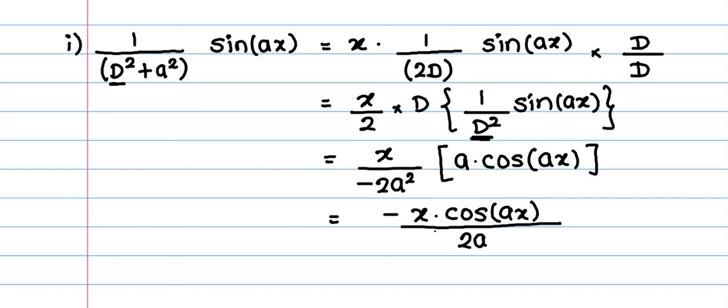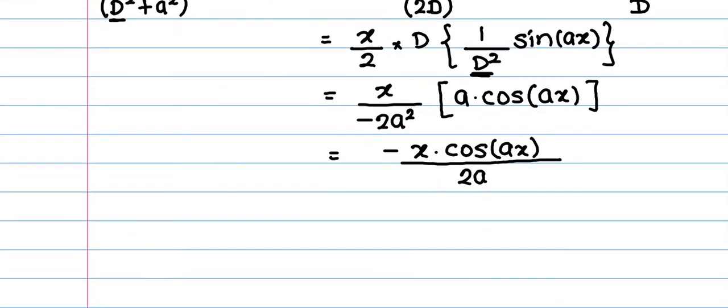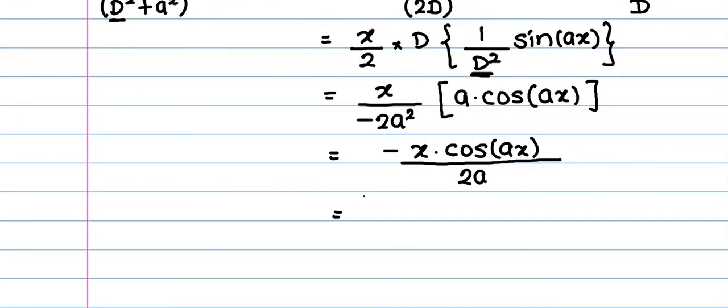How we can generalize this result? We can convert this cos in terms of original trigonometric function sin by rewriting this as, it is equal to minus x upon 2 times A as it is and this cos can be written as sin of A x plus pi by 2.